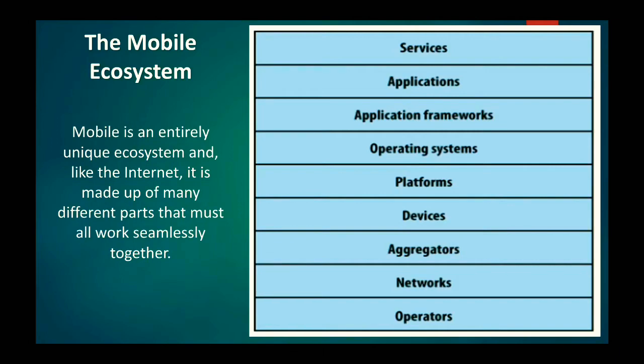As we know, for each and every bigger thing it has some small parts or small sections. The same way, the mobile is an entirely unique ecosystem — like the internet, it is made up of many different parts or different sections which work seamlessly together. These are the different layers of the mobile ecosystem.